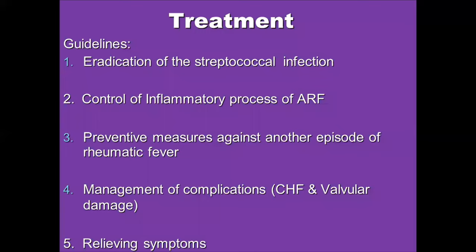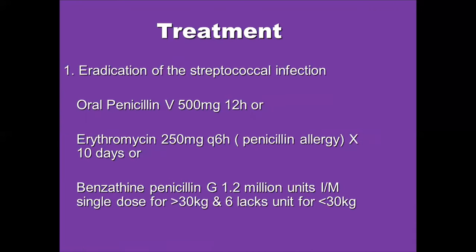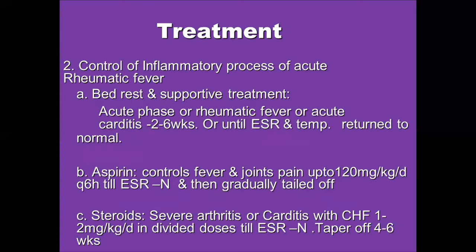Once the diagnosis is confirmed, the goals of treatment are: eradicating the streptococcal infection, controlling the inflammatory process of ARF, preventing another episode of rheumatic fever, managing complications like heart failure and valve damage, and relieving symptoms. For eradication of streptococcal infection, oral penicillin V 500 mg twice daily or erythromycin 250 mg every 6 hours for 10 days is preferred. Benzathine penicillin G 1.2 million units IM as a single dose for those over 30 kg, or 600,000 units for those under 30 kg, can also be used.